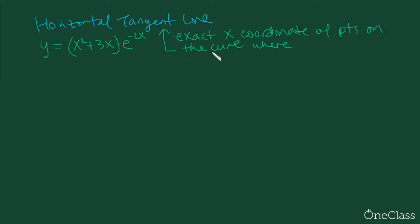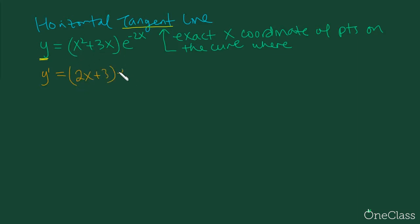We are dealing with a tangent line on a curve, which immediately tells us we need to find the first derivative. This is a product of two different functions, so we take the derivative using the product rule. The first part gives us 2x + 3, and we keep the second part as it is.